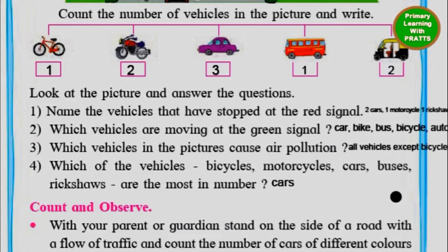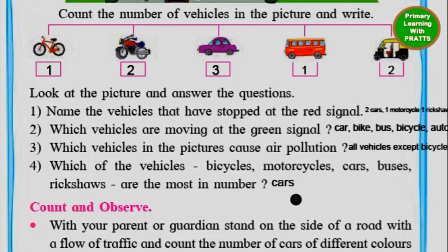Which of the vehicles — bicycles, motorcycles, cars, buses, or rickshaws — are the most in number? We can see one cycle, two motorbikes, three cars, one bus, and two autos. So the answer is three — cars are the most in number. This way we finish our data interpretation in maths for picture exercises.